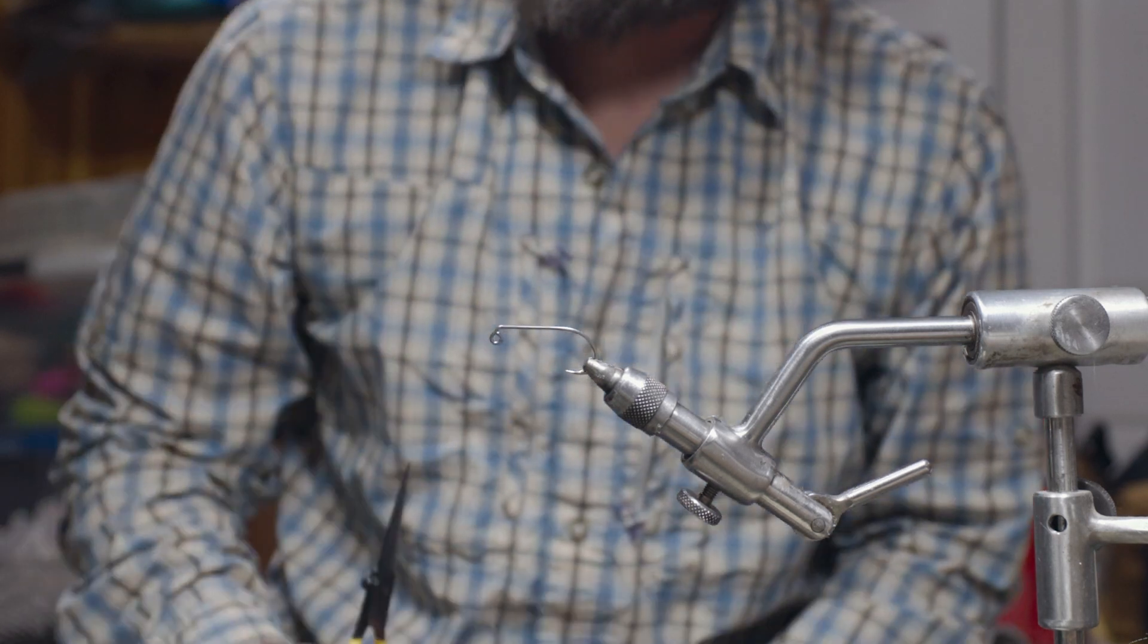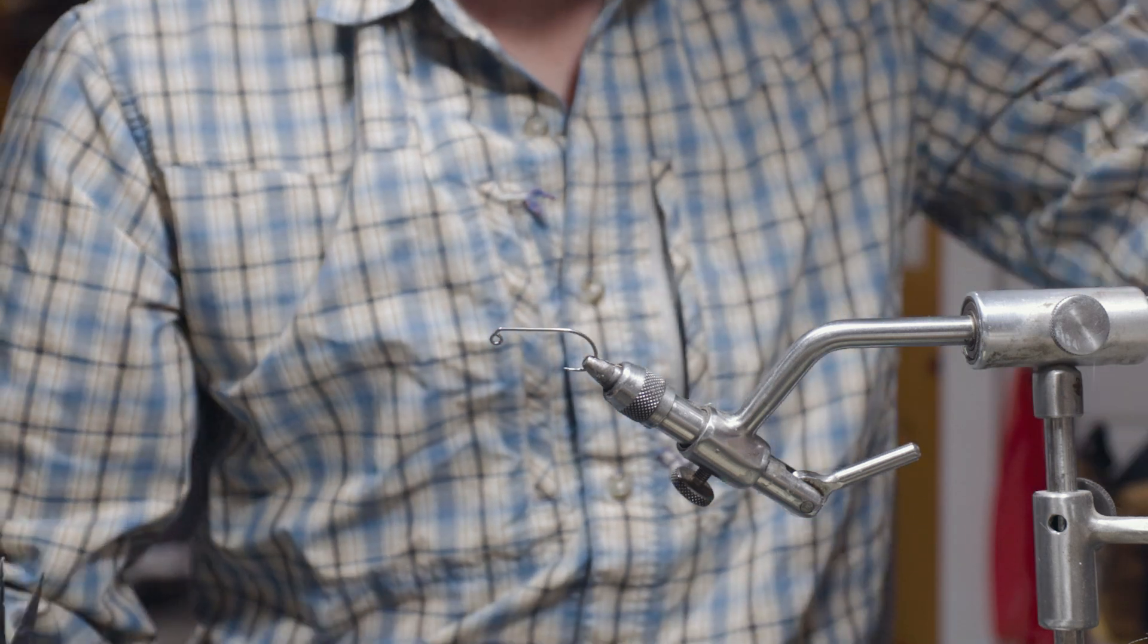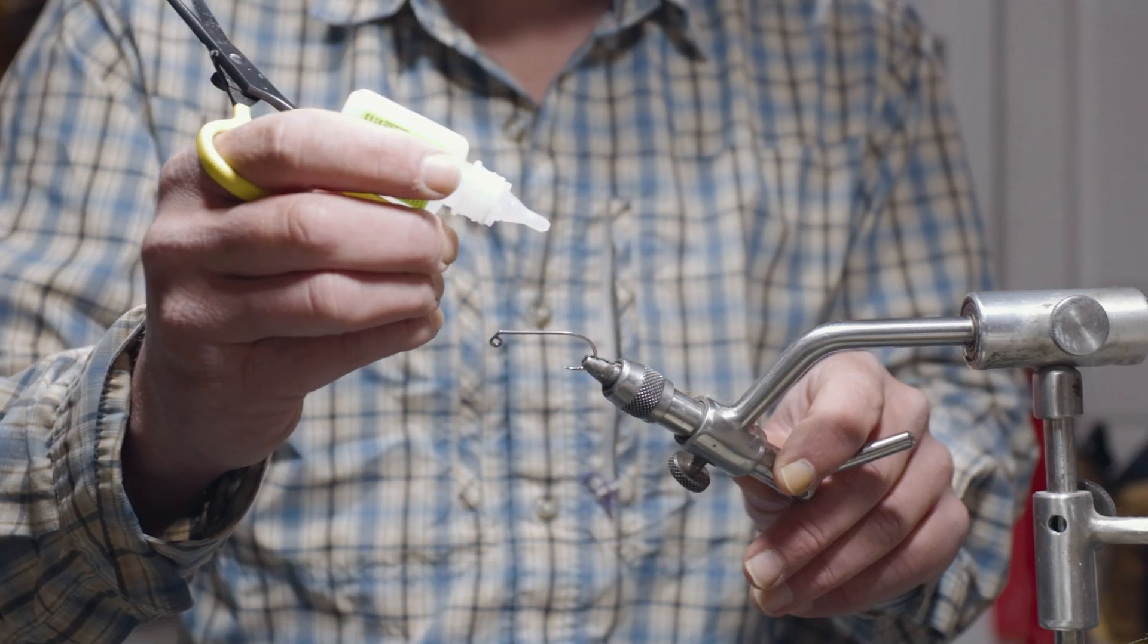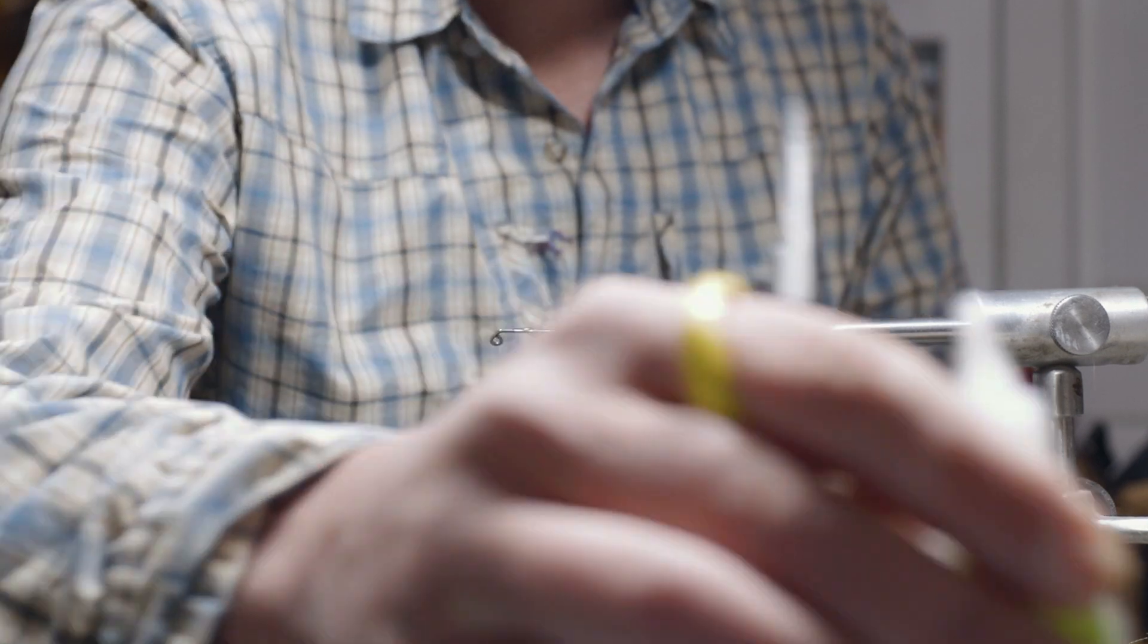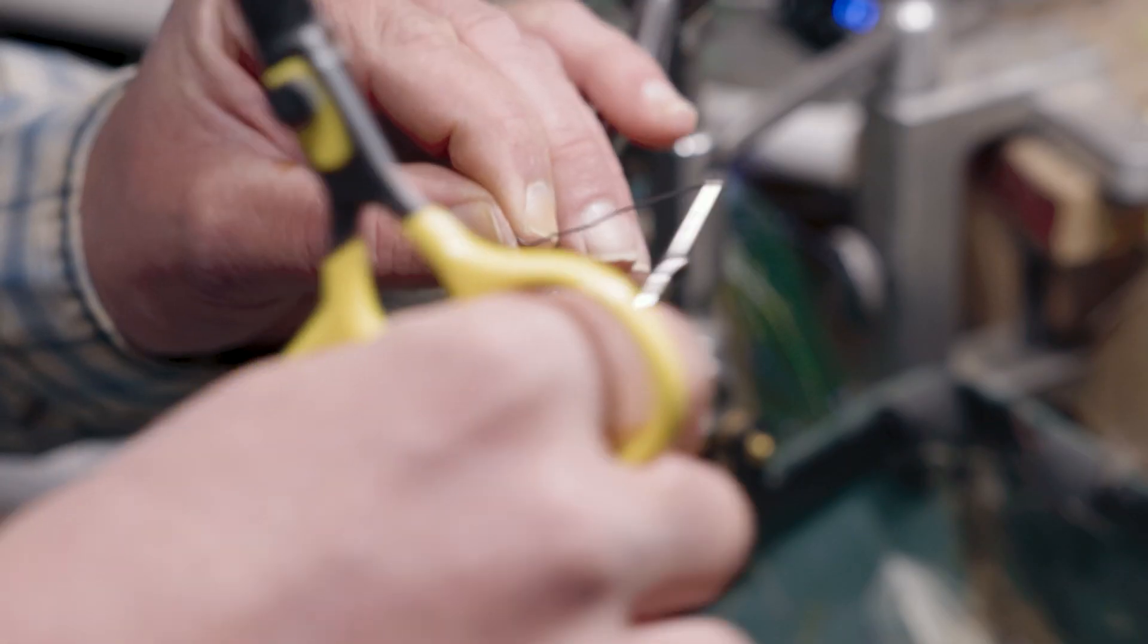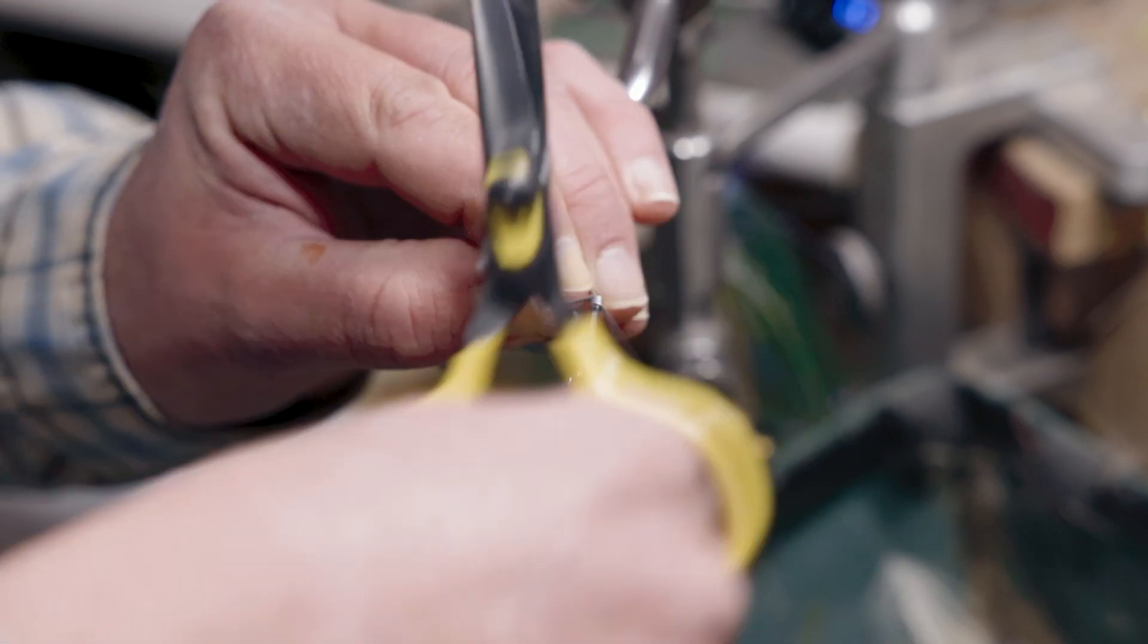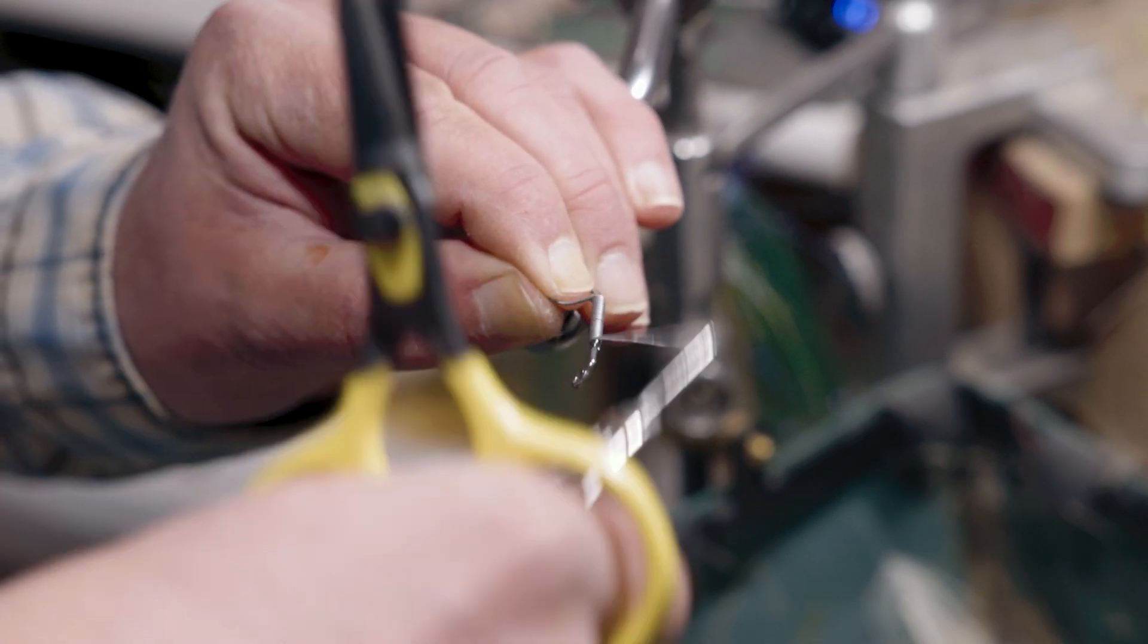First thing we're going to do is stick a saltwater jig hook in the vise and take some Zap-A-Gap and just squeeze a little bit, spread it out onto the shank of the hook, and take some lead wire and wrap that all the way down towards the eye.